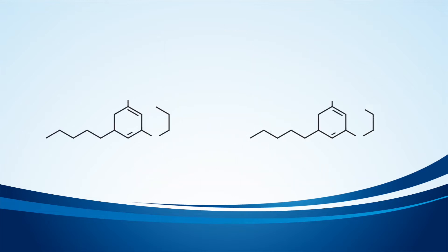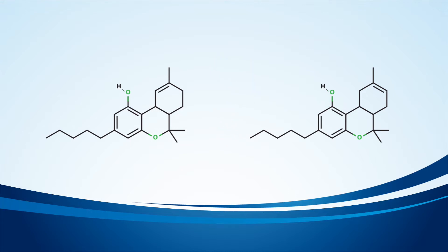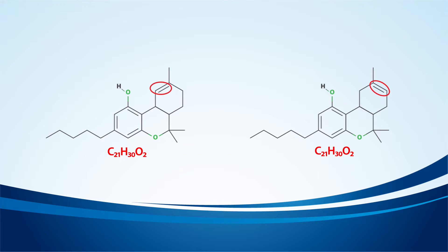Here are the structures for the two — but which one is which? They look really similar because they're isomers. They have the same molecular formula and practically the same structure. Practically the same, but not the same. In this case, the difference is the location of this double bond.